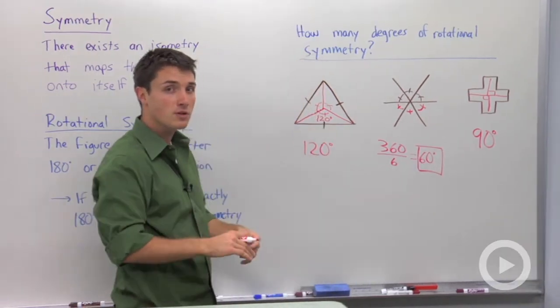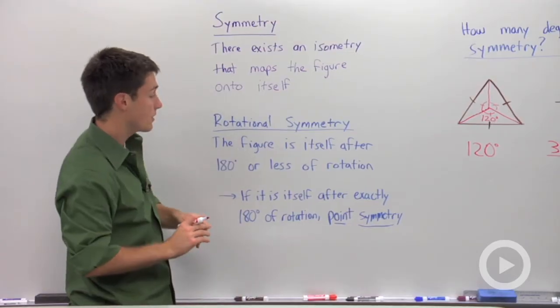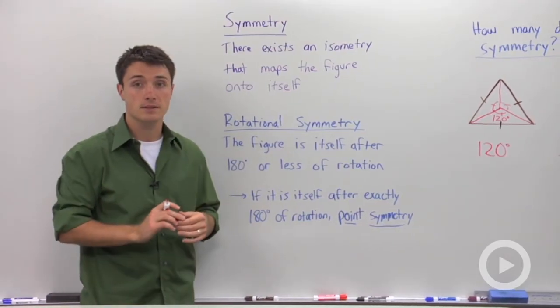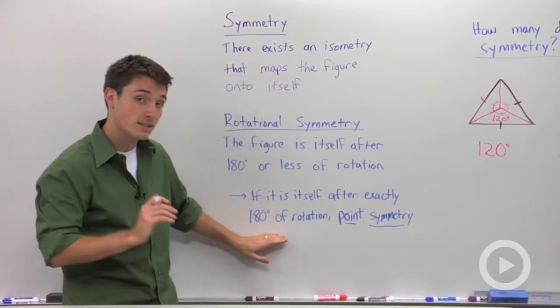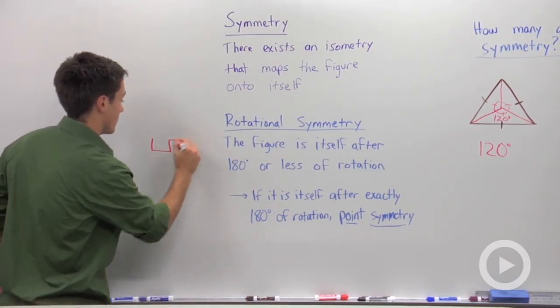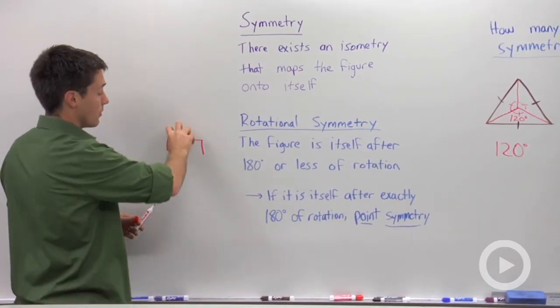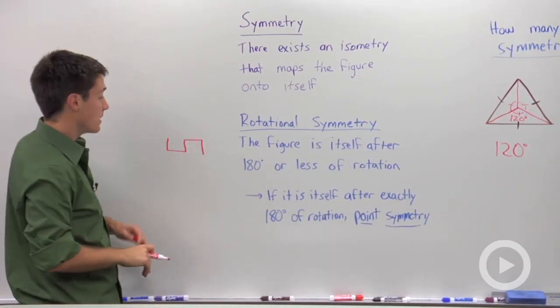So again, rotational symmetry, what does it mean? It means that you can rotate it less than 180 degrees and the figure will be exactly the same. And if you can rotate it exactly 180 degrees, so let's say we had a figure kind of like this, you see that if I rotate it exactly 180 degrees, it will be itself.